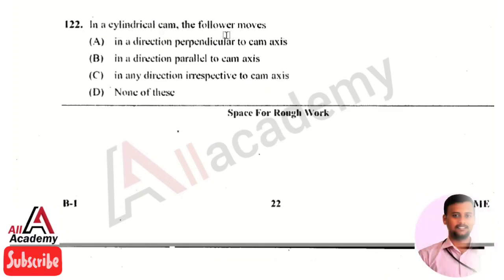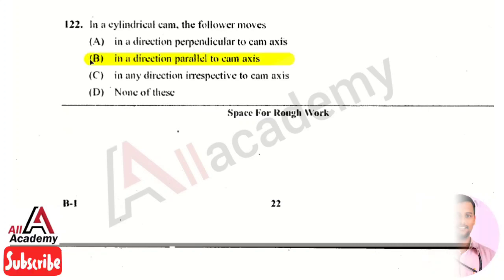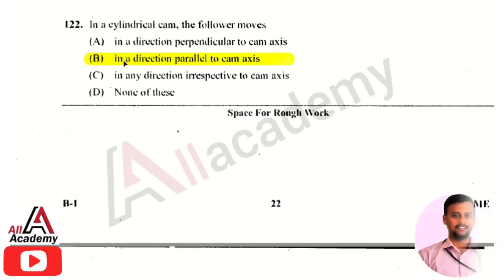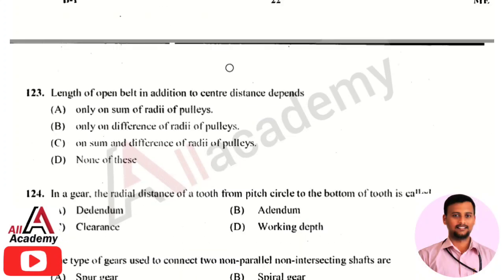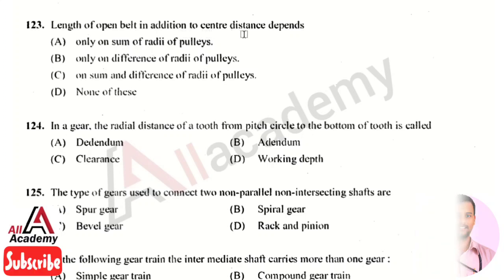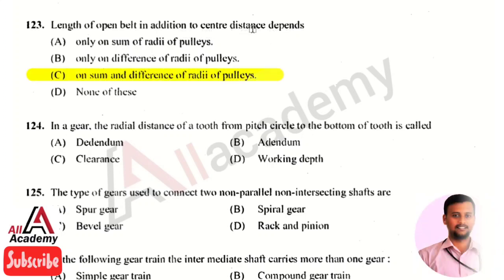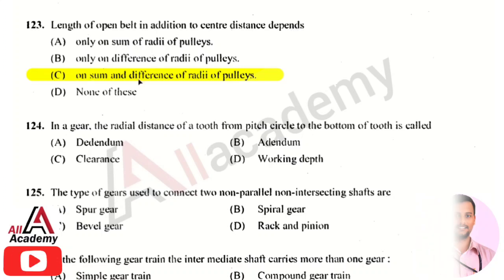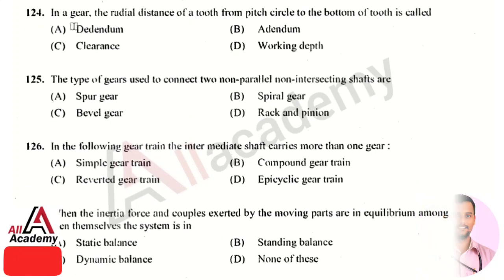In a cylindrical cam, the follower moves in a direction parallel to the cam axis. The length of an open belt, in addition to center distance, depends on the sum and difference of the radii of the pulleys.